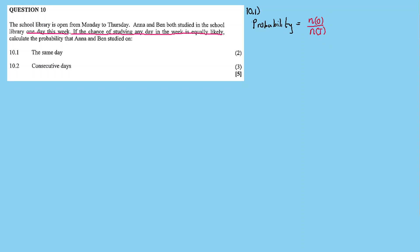the number of outcomes divided by the total number of outcomes. So in this case, the number of outcomes is 4. On the same day is equal to 4. It could have been Monday, Tuesday, Wednesday or Thursday, so that's 4.